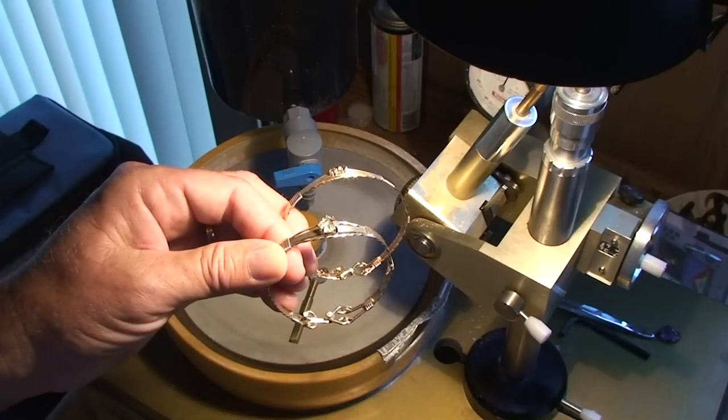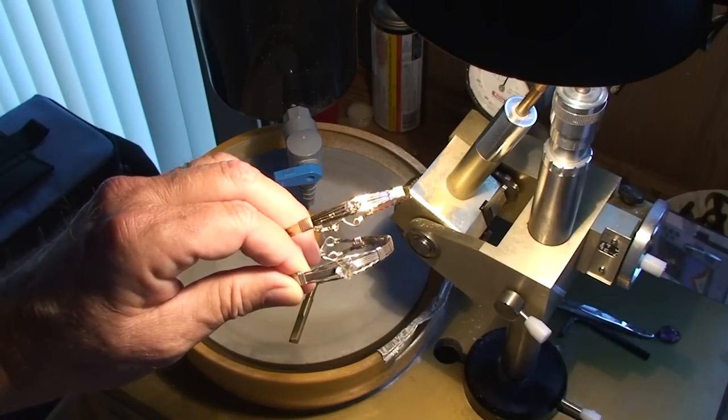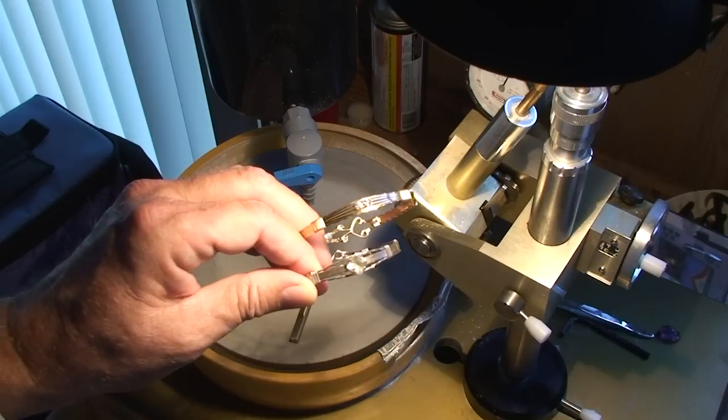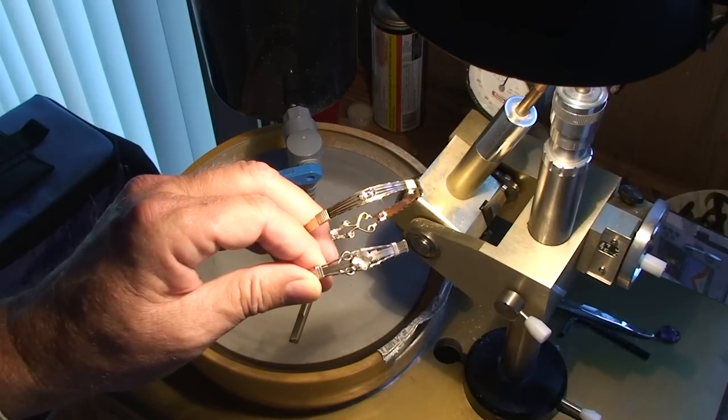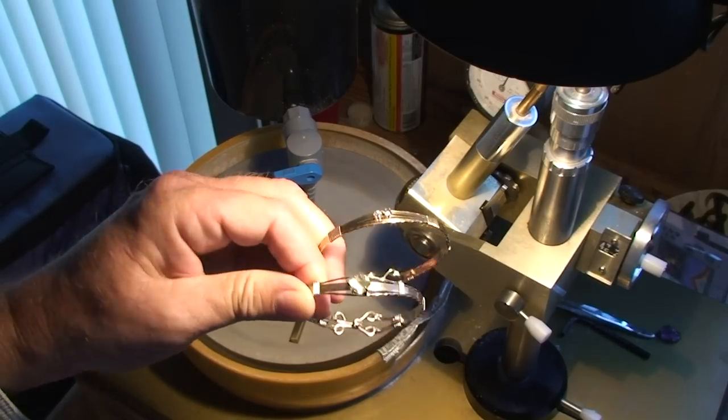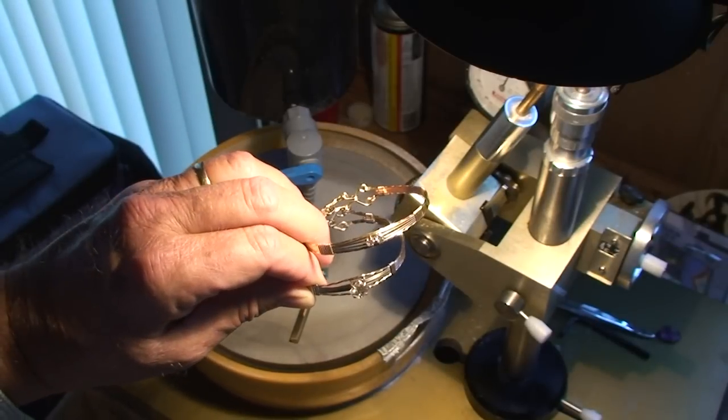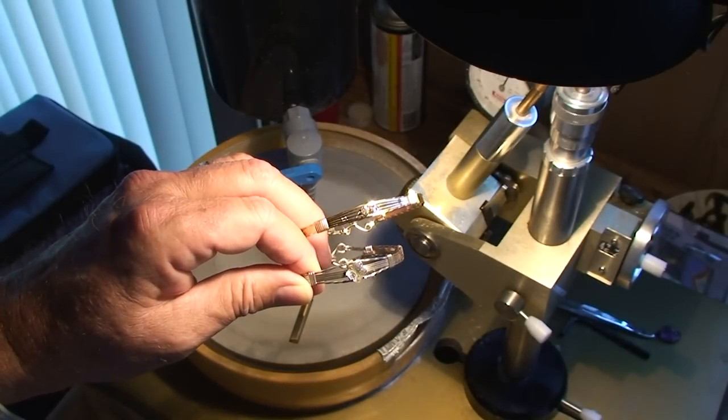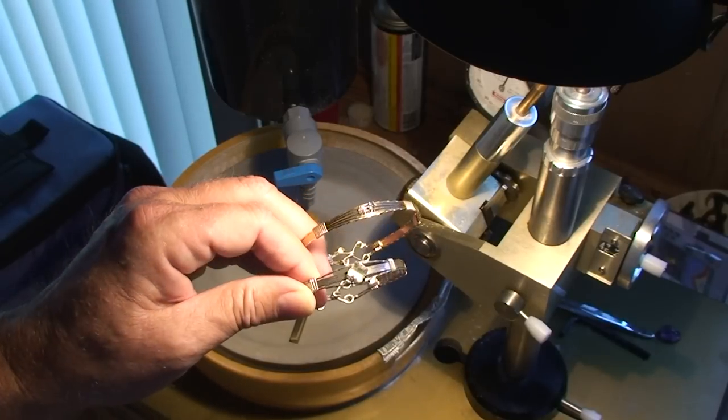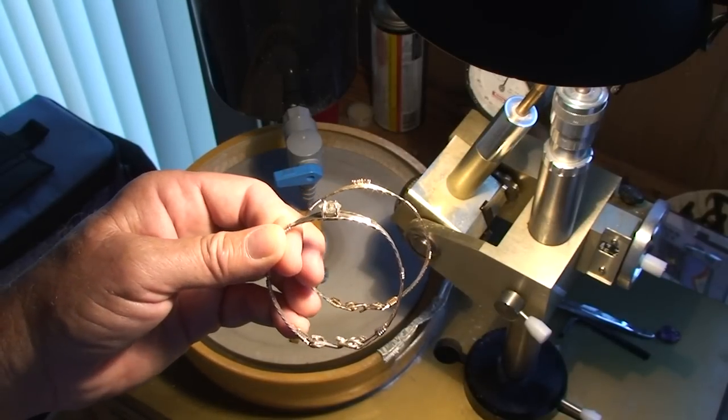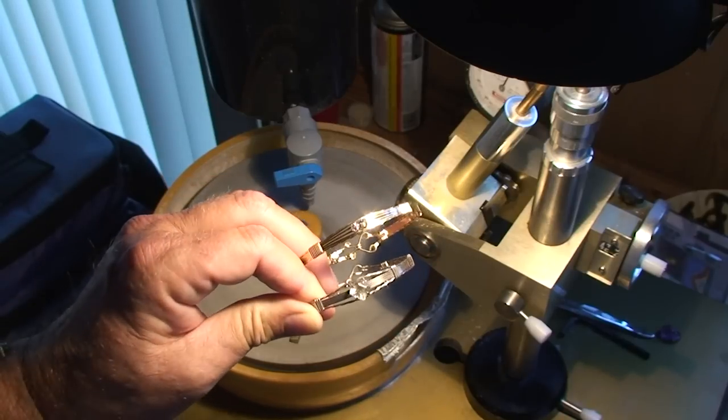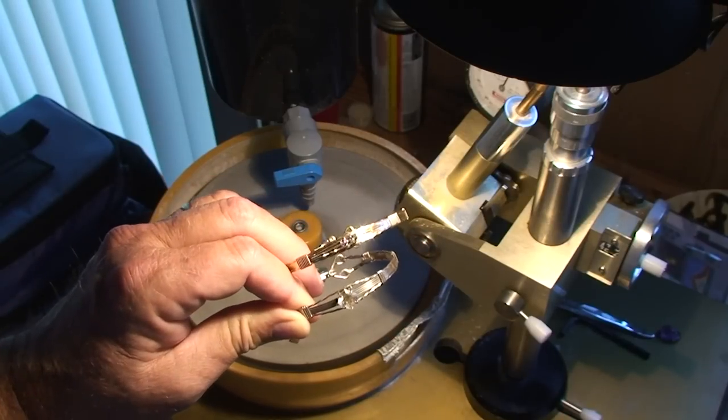But what we did and what we still do is we give a certificate of authenticity. Now we find these gems, so there's no question where they come from. We also give them a 30-day money-back guarantee. That gives them time to get to their jeweler or GIA expert or whatever it is to authenticate the stone to their satisfaction.